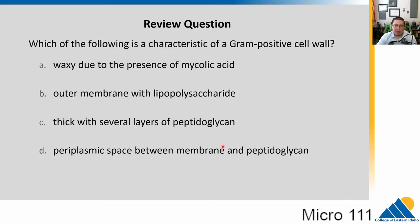The answer would be C. Thick with several layers of peptidoglycan. That is most characteristic of the gram-positive cell wall. It only has one membrane, so there's no periplasm. LPS is in gram-negatives. And mycolic acid was in gram-variable organisms like Mycobacterium. So gram-positive means a thick peptidoglycan wall.